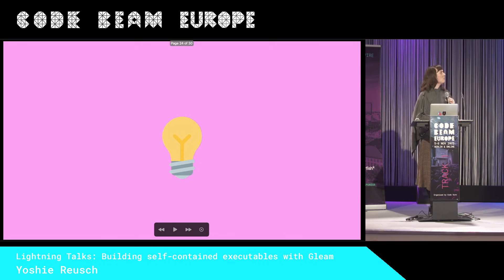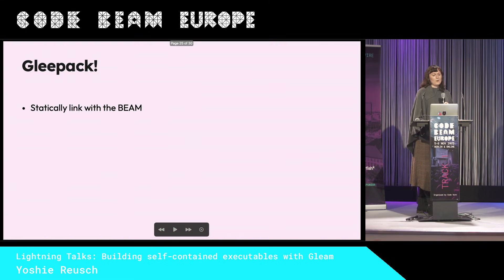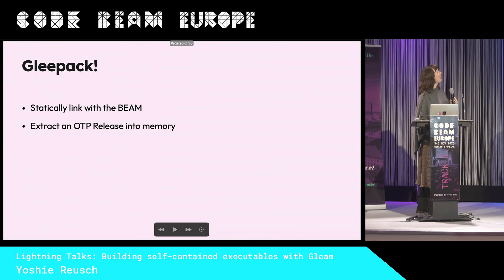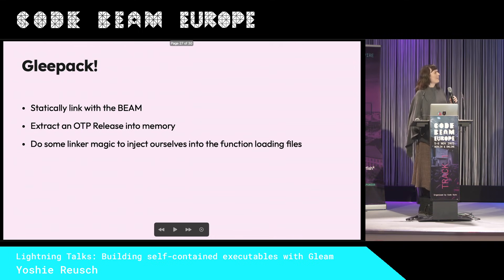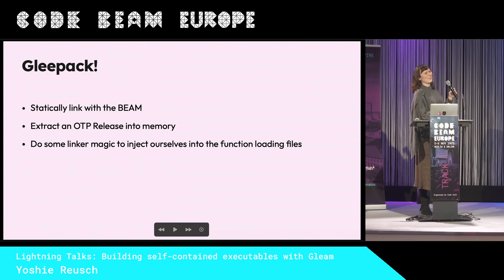Maybe we can just wrap the Beam VM into our own program that does all the things. What if we build our own program that statically links with the Beam, then just extracts the OTP release into memory, and then does some black linker magic to replace the open function with our own definition that redirects it to our in-memory OTP release.